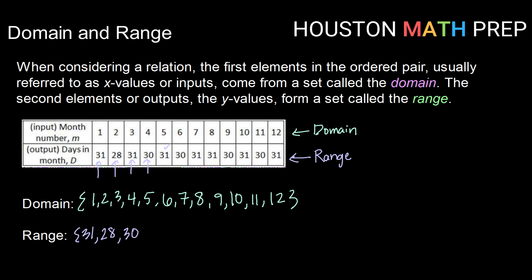Checking the rest, I have 31, 30, 31, 31, 30, 31, 30, and 31, all of which I already have listed. So my list of possible outcome or output values is 31, 28, and 30.